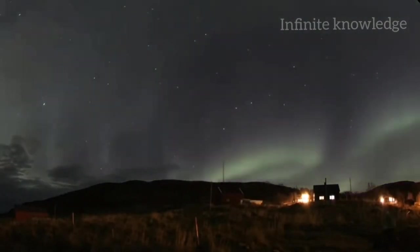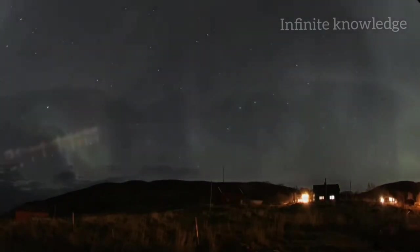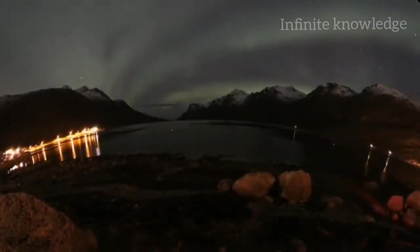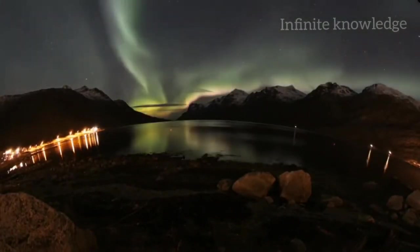Auroras can appear as long, narrow arcs extending overhead from horizon to horizon. From the side, they look like ribbons that kink, fold, and swirl.